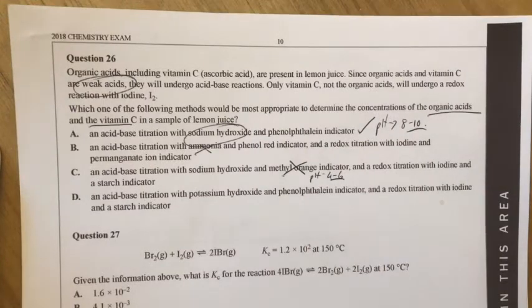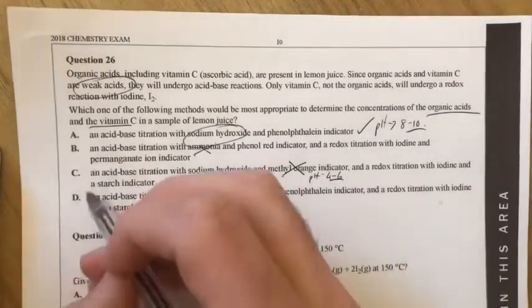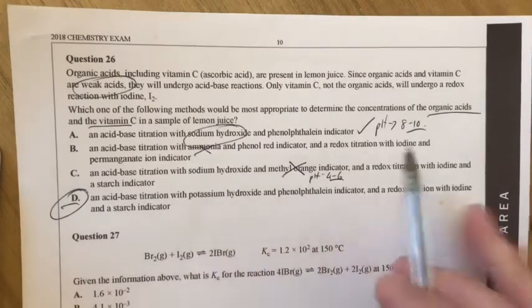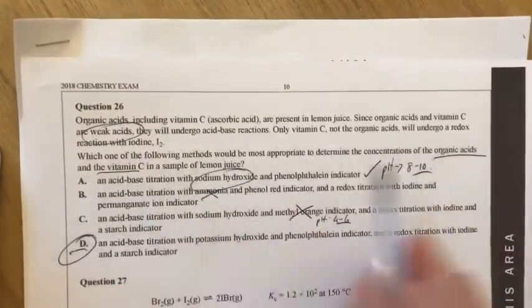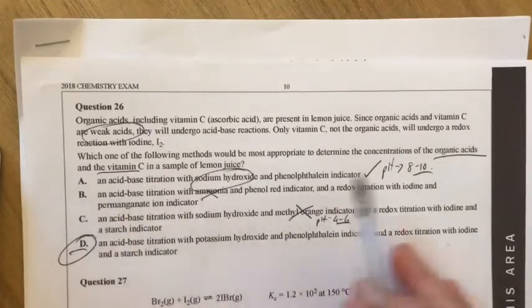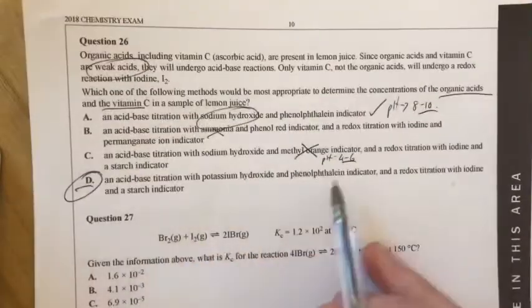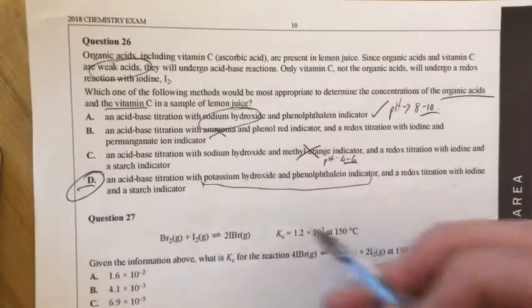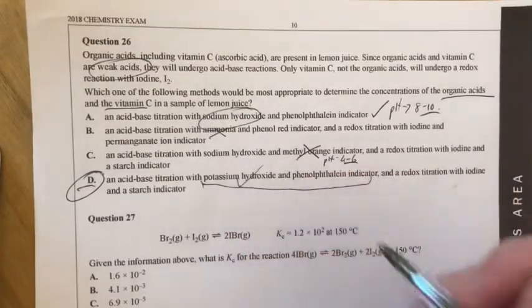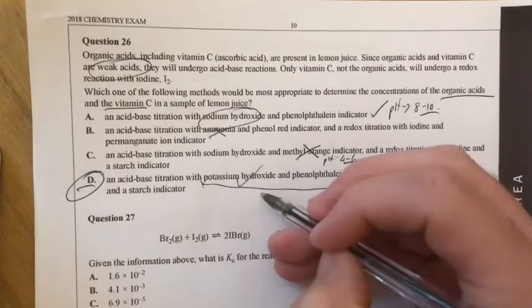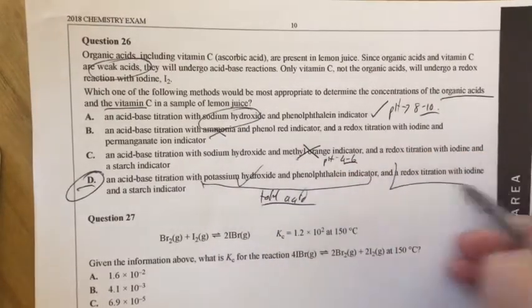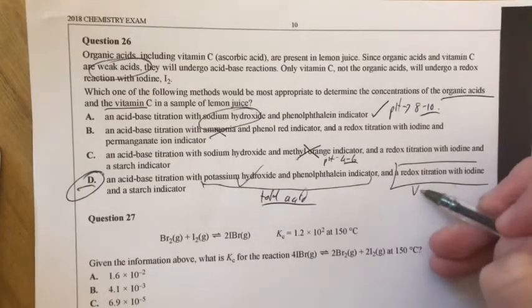Coming back from the examiner's report however, they are saying that the answer is D and I can see why. What we want to look at is for both, we need to find out these both separately. What A is going to do is only find out these all together. With D, what you're going to do is your titration, which is a good titration between a strong base and using the right indicator, that's going to find total acids. And then this part here is going to find your vitamin C.